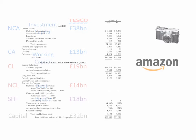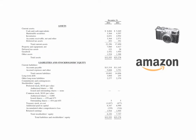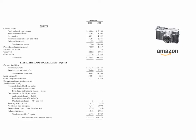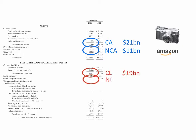Now let's compare Tesco to another company, Amazon. Amazon's balance sheet may be structured a little differently, but if we identify the five main sections of the balance sheet, we can see that Amazon has non-current assets of £11 billion, current assets of £21 billion, current liabilities of £19 billion, and non-current liabilities of £5 billion. Net assets, and thus shareholders' funds, are therefore £8 billion.